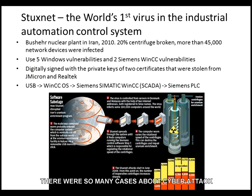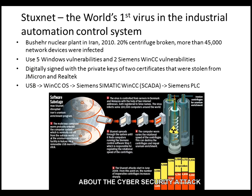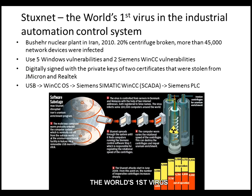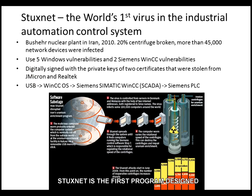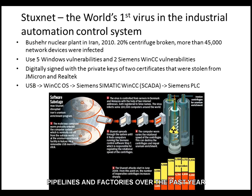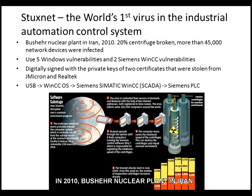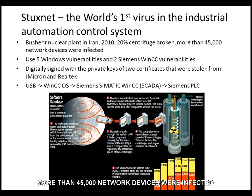There have been many cases of cyber attacks worldwide. The first example is Stuxnet — the world's first virus targeting industrial automation control systems. Stuxnet was the first program designed to cause serious physical-world damage. It hit an unknown number of power plants, pipelines, and factories starting from 2009. In 2010, the Bushehr nuclear plant in Iran was infected, causing 20% of centrifuges to break and more than 45,000 network devices to be infected.